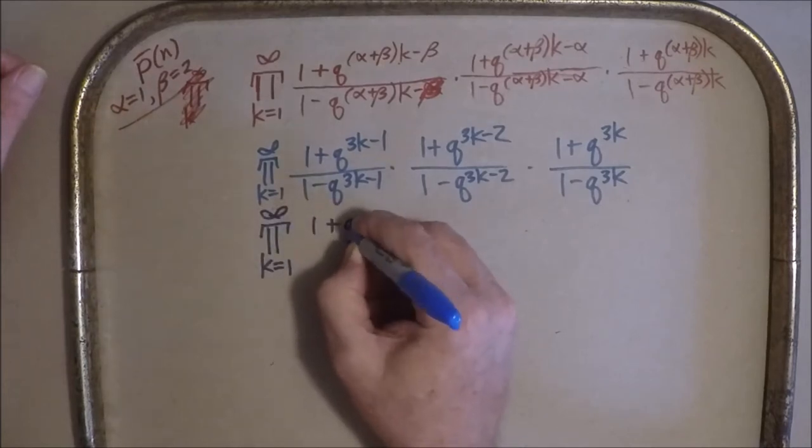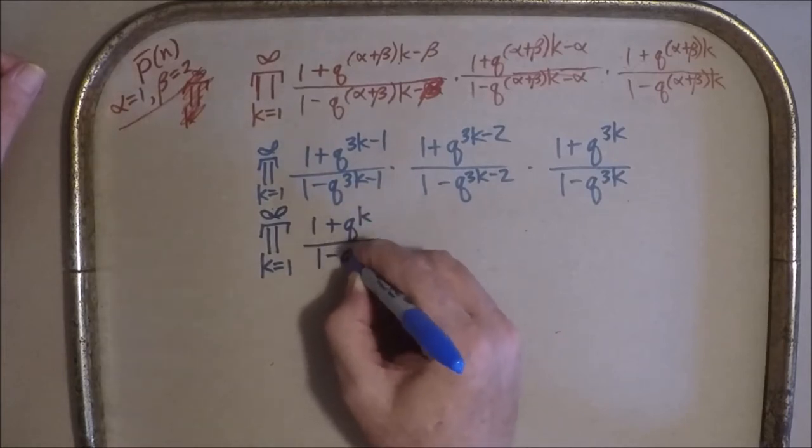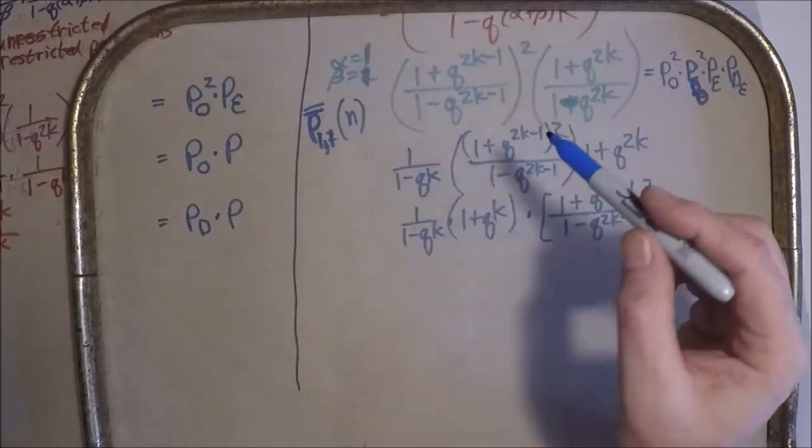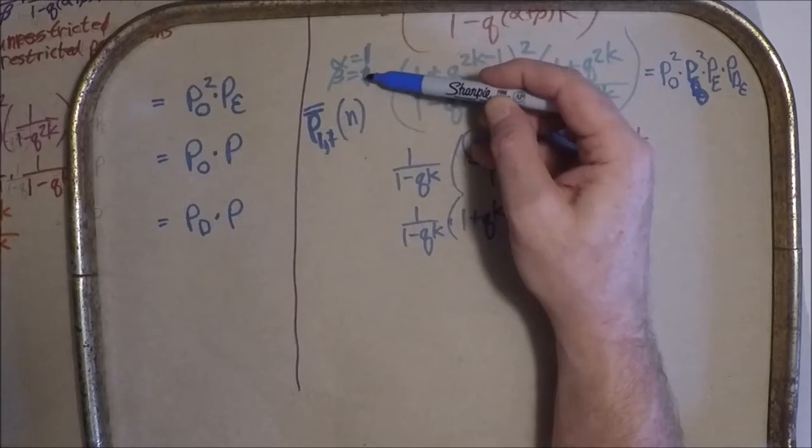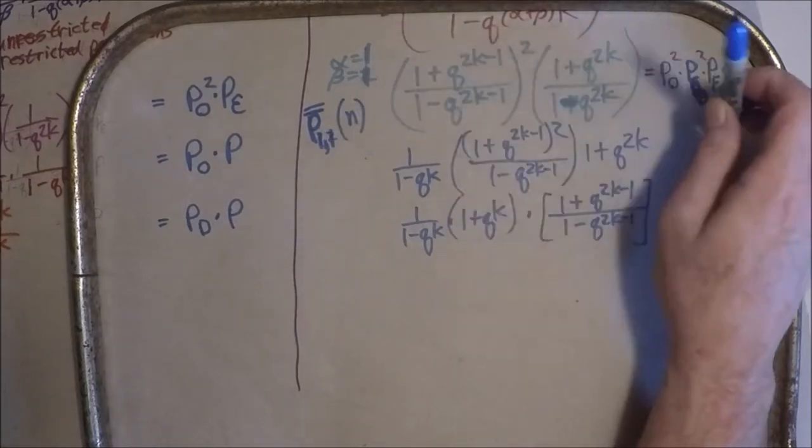So this is over partitions. K equals one to infinity of one plus Q to the K over one minus Q to the K. Coming back to this where we accidentally put in alpha equals one, beta equals one. We turned over partitions into two over partitions.